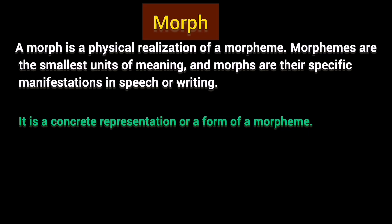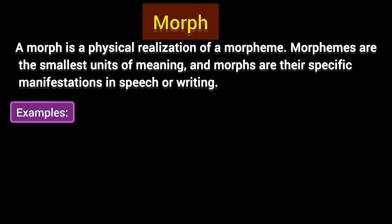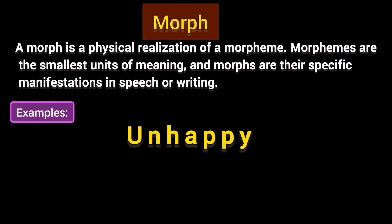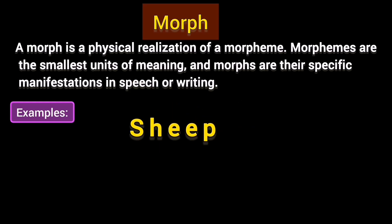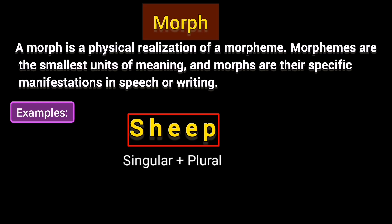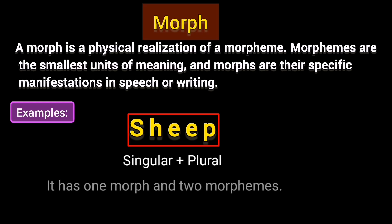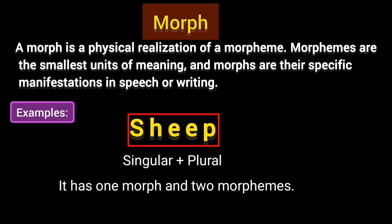Look at these examples. The word 'unhappy' has two morphs: 'un', which means 'not', and 'happy', which refers to the feeling of pleasure. For the feeling of pleasure and for negation, two separate morphs are used. Now look at the word 'sheep' — this word has two morphemes but only one morph. The word itself is both singular and plural, so there is no separate morph for plurality. Therefore, 'sheep' has one morph and two morphemes.